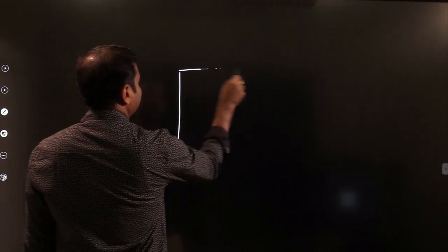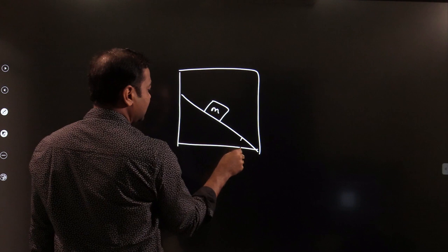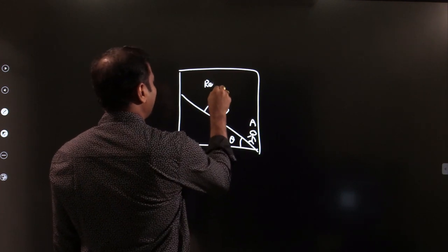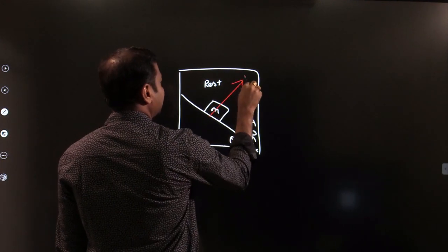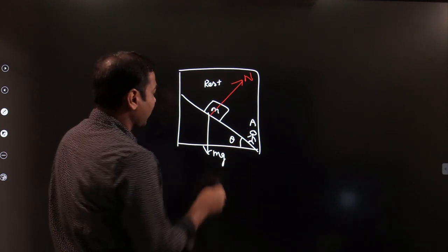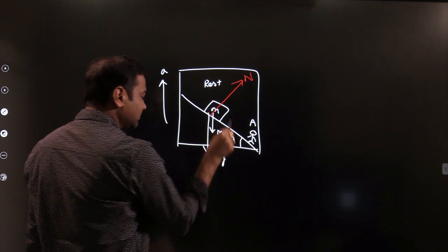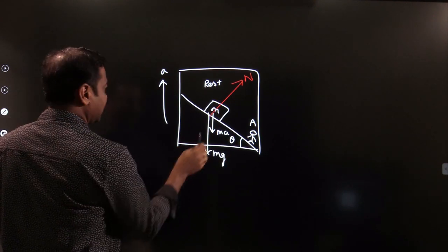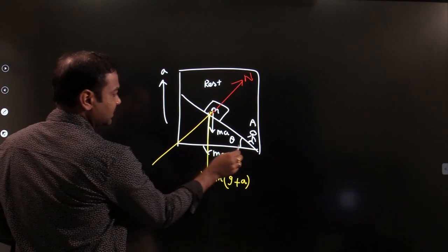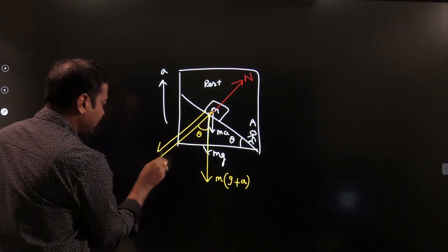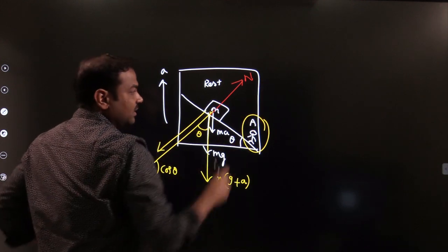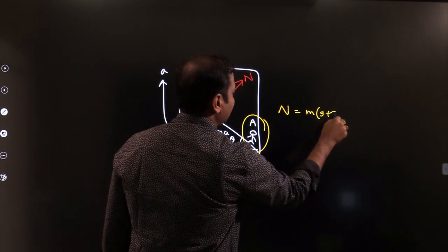To clarify: this is the lift; this is the block of mass M, angle θ. Solving with respect to observer A — as seen by A, block is at rest. Normal reaction acts perpendicular to the incline. Other forces acting: Mg downward. Since the frame is accelerating upward, pseudo force MA also acts downward. Total net downward force = M(g + a). Extending the normal reaction direction, this angle is θ, so the component = M(g + a)cos θ. Since block is at rest as seen by A: normal reaction = M(g + a)cos θ.